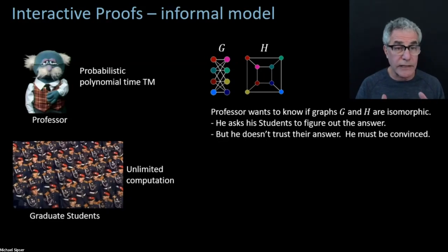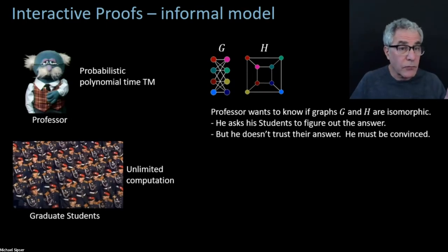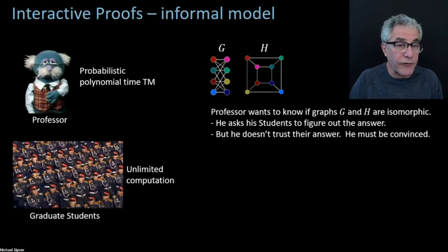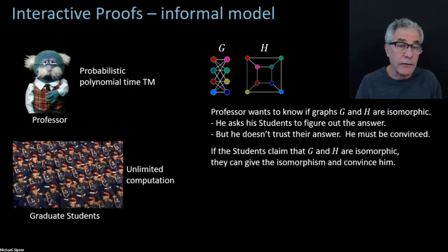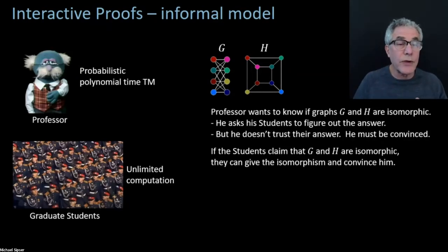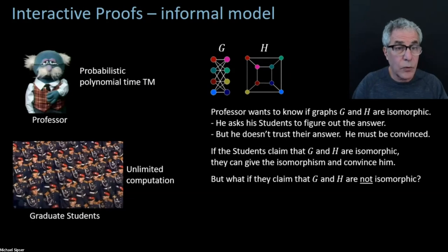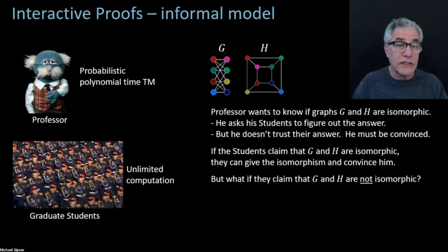How could the students convince the professor that they've really done the work and figured out whether the graphs are isomorphic or not? Well, if the graphs are isomorphic and the students figure that out, then life is good — what are they going to do to convince the professor? They're going to hand over the isomorphism and show that yes, those graphs really are isomorphic and here's how the correspondence works. Professor can check and say yes, now I'm convinced. But suppose the graphs were not isomorphic — what are we going to do then?